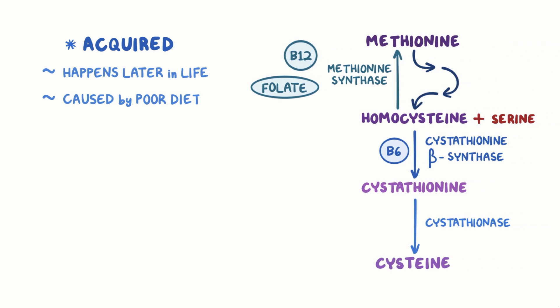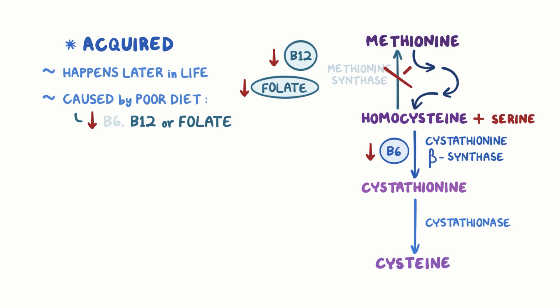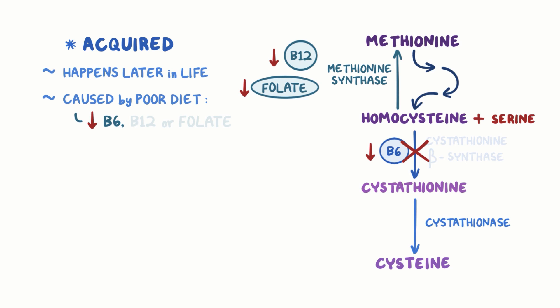Acquired homocysteinuria happens later in life and is often caused by poor diet, where there are deficiencies in vitamin B6, B12, or folate. B12 and folate deficiency decreases the activity of methionine synthase, while B6 deficiency does the same to cystathionine beta synthase, both leading to the buildup of homocysteine in the body.